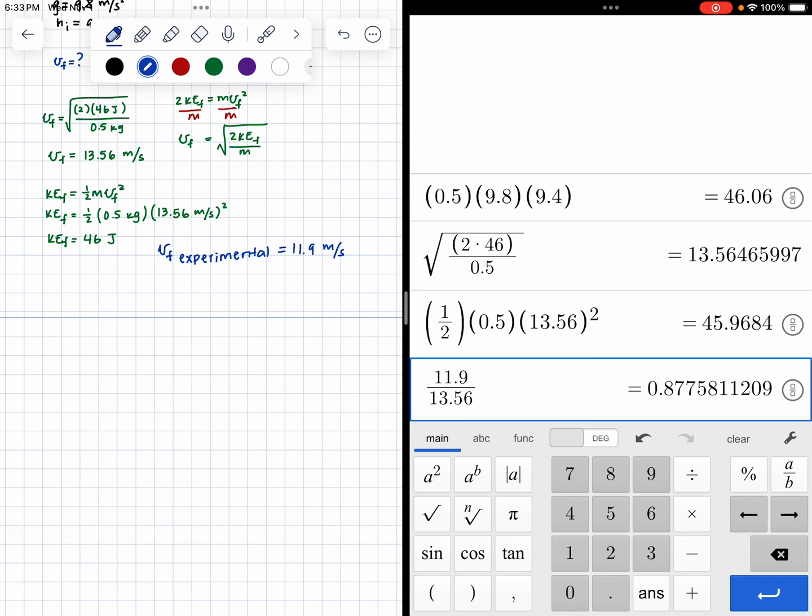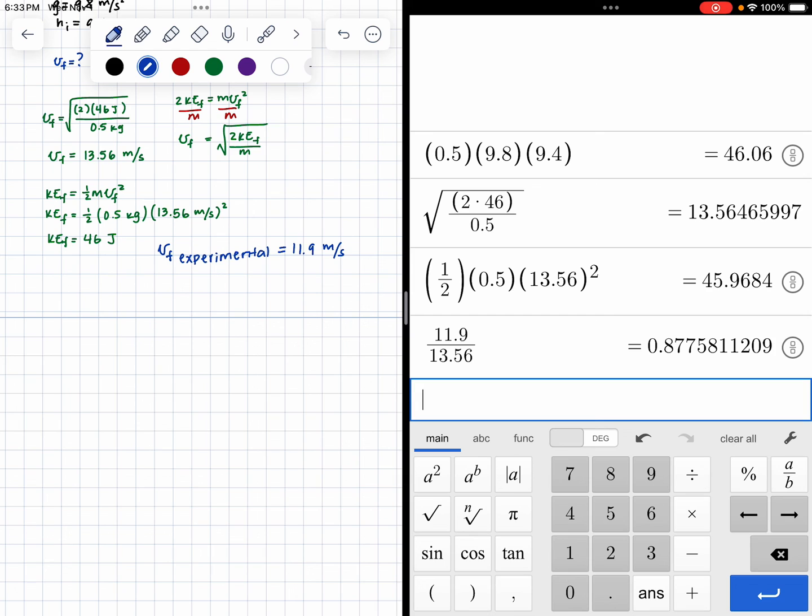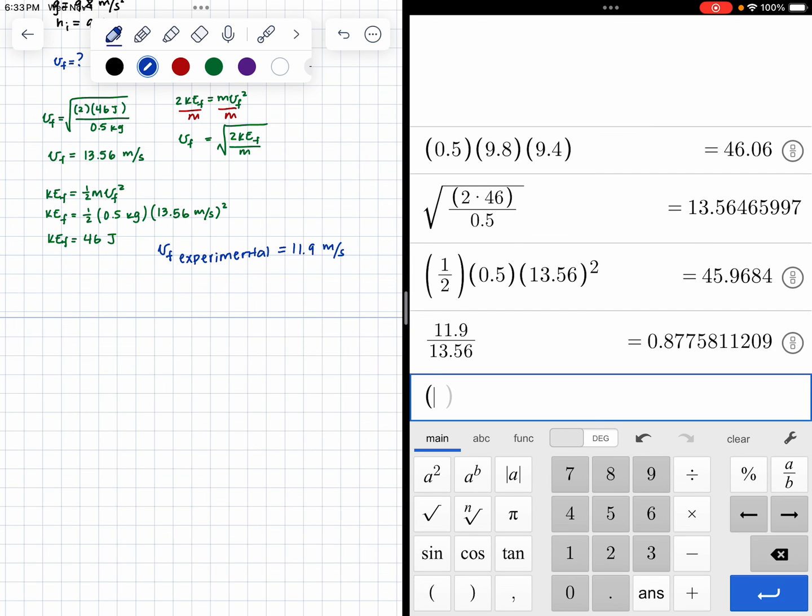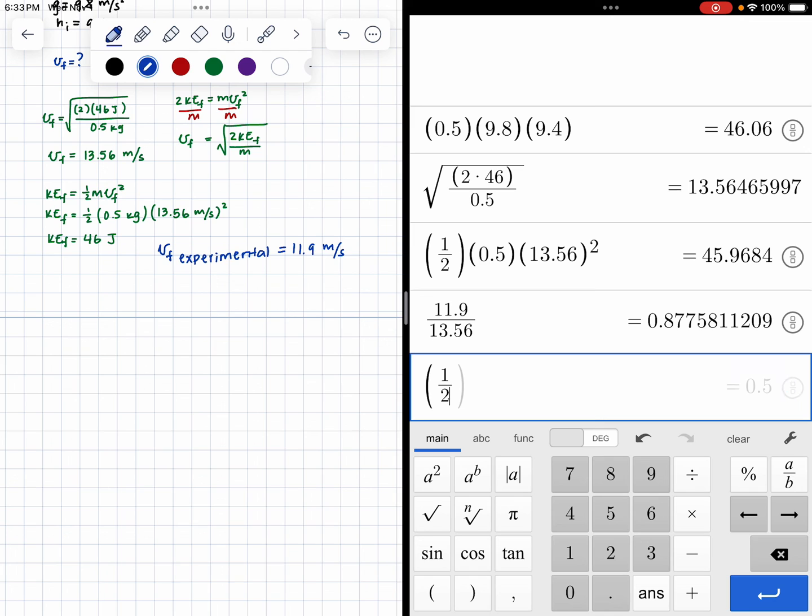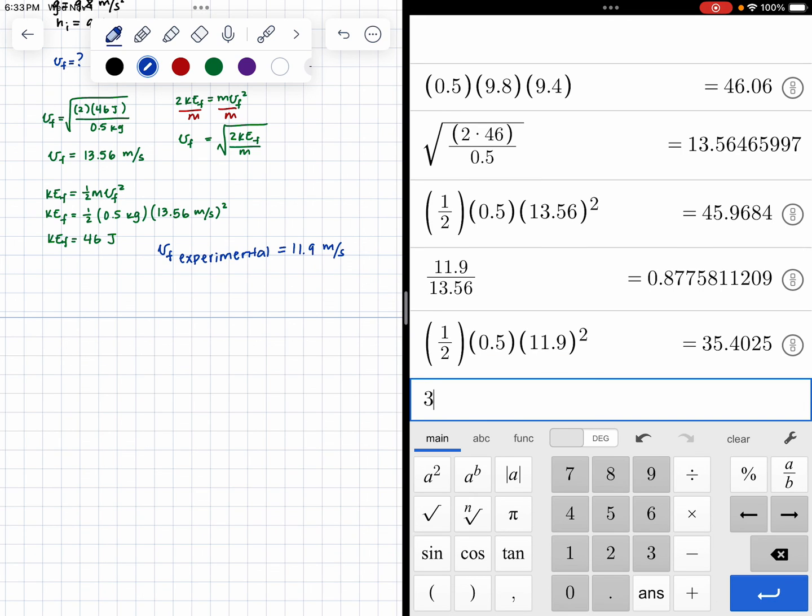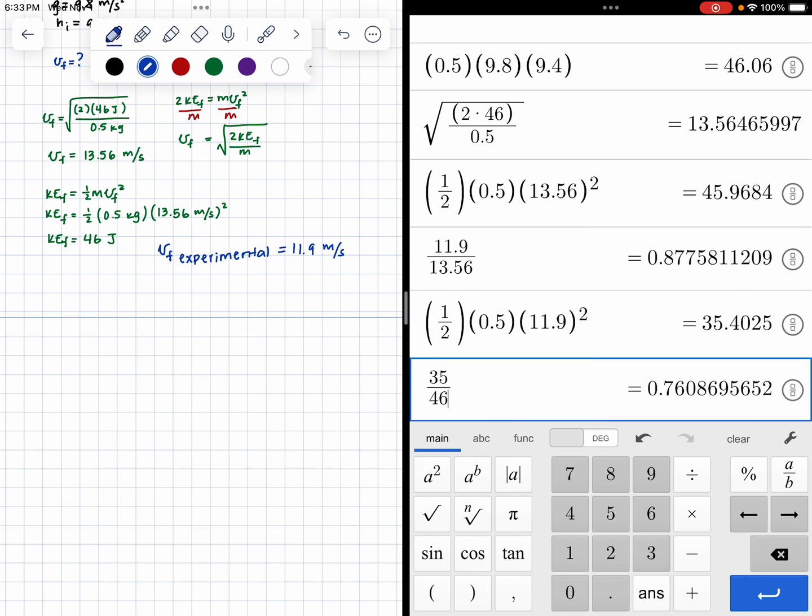So we have about 87, 88 percent. That means 12 percent of the energy maybe was transferred away due to air drag. So that's really good, actually, 88 percent close. Now let's see about the energy. Let's see how far we are from 46 joules. 35 divided by 46. So we got about 76 percent of the energy. We lost about 24 percent due to air drag. Again, these numbers make sense.